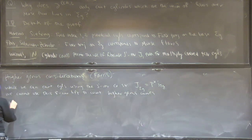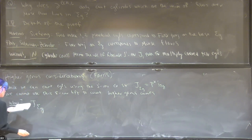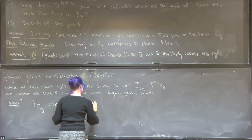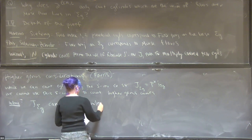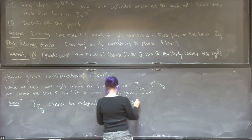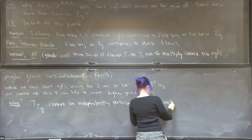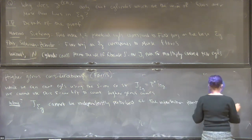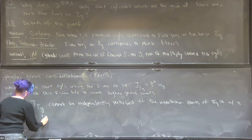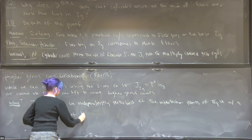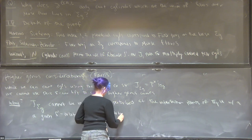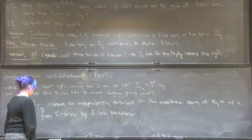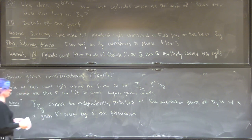The point is that this almost complex structure cannot be independently preserved. The intersection points of a J-holomorphic curve U with a given S1 orbit — you can't do this with an S1-equivariant perturbation. When you're a cylinder, you don't have to worry about this issue because you're going to be fixed by the S1 orbit — you have an S1 action already.